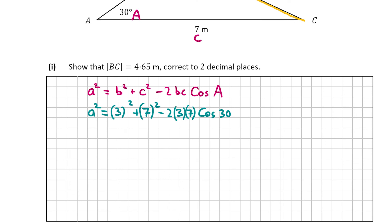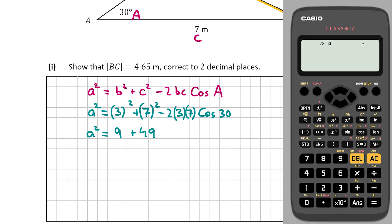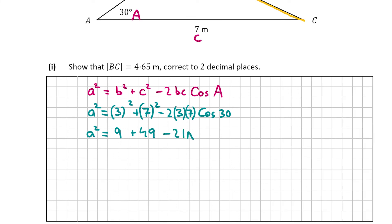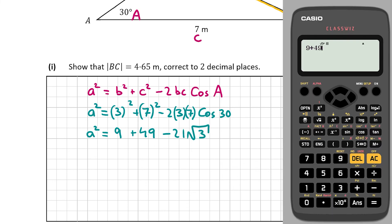I recommend doing the right-hand side in three parts: do 3 squared, then 7 squared, then minus 2 × 3 × 7 × cos 30. So a² = 3² + 7² − 2(3)(7)cos30° = 9 + 49 − 2(3)(7)cos30. Make sure your calculator is in degrees: click Shift, Setup, then 2 for angle unit, then 1 for degrees — you should see a D on your calculator. Then 2 × 3 × 7 × cos30 = 21√3, so a² = 9 + 49 − 21√3 = 58 − 21√3.